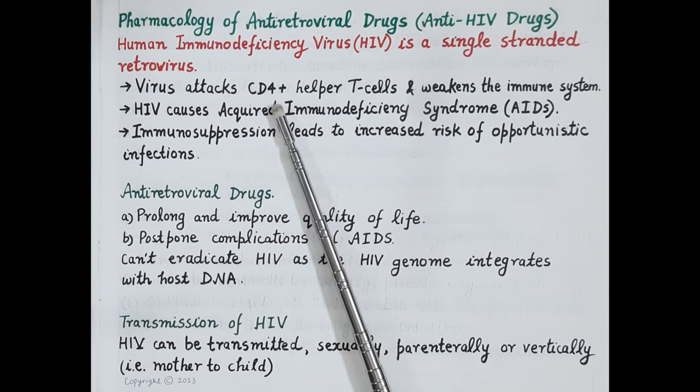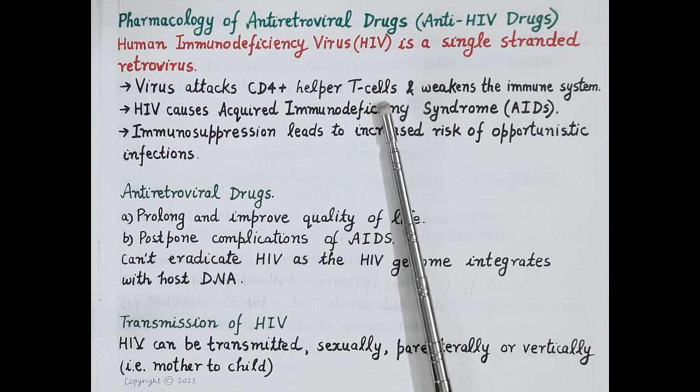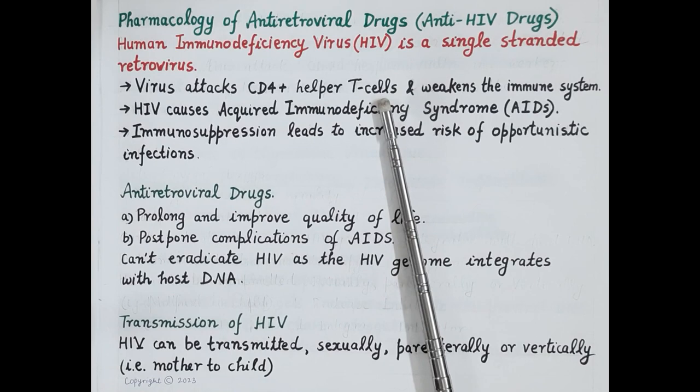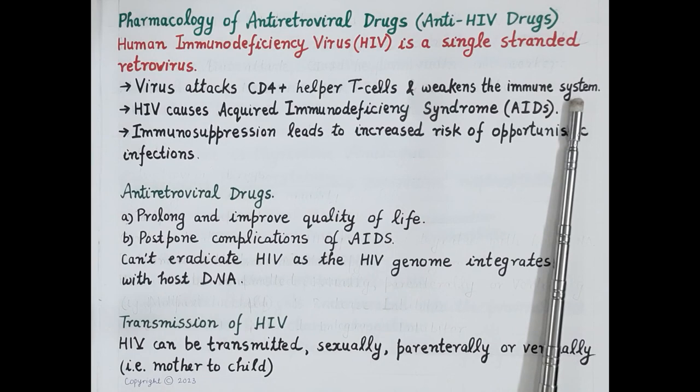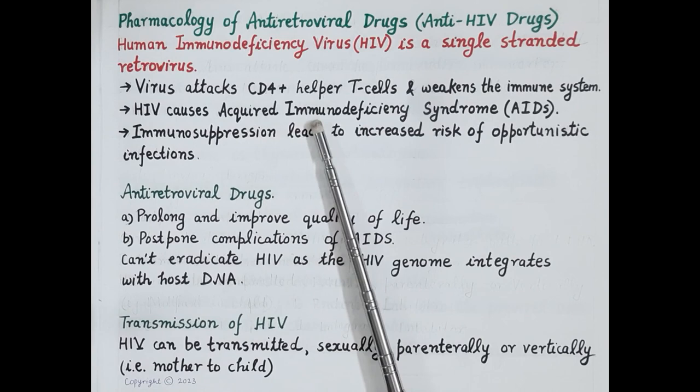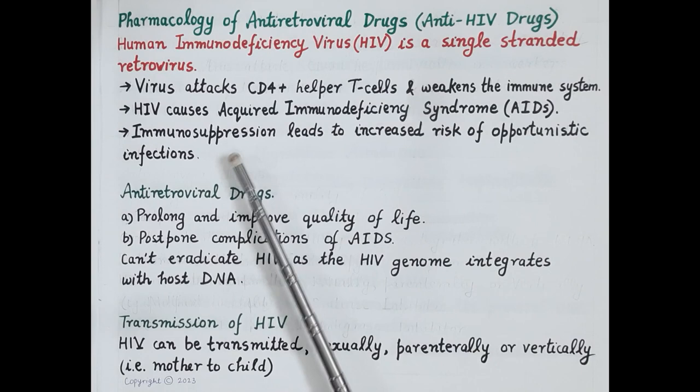The primary cell that is attacked by HIV is the CD4-positive helper T cells. T cells are the immune cells of the body that fight against diseases. As HIV attacks CD4-positive helper T cells, it weakens the immune system, immunity of the body falls, and thus HIV causes acquired immunodeficiency syndrome — that is AIDS.